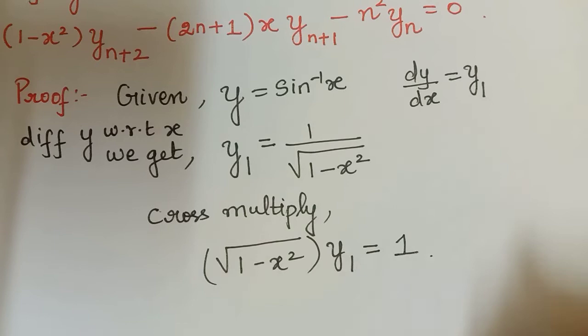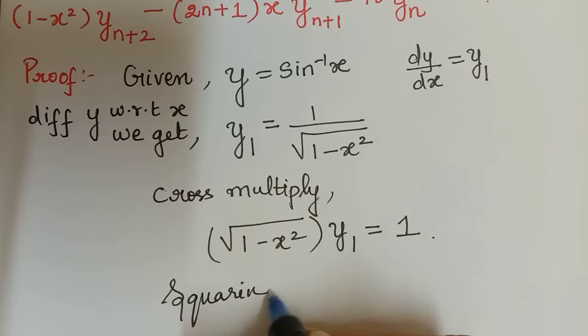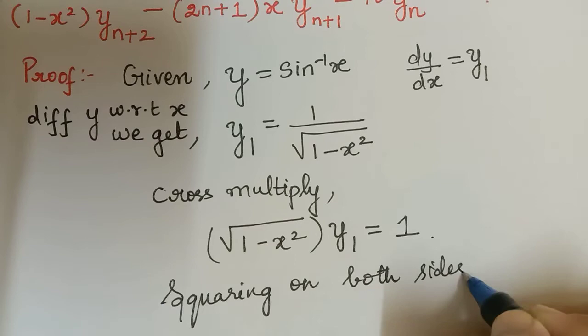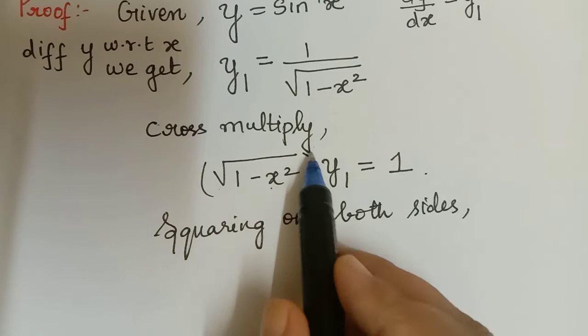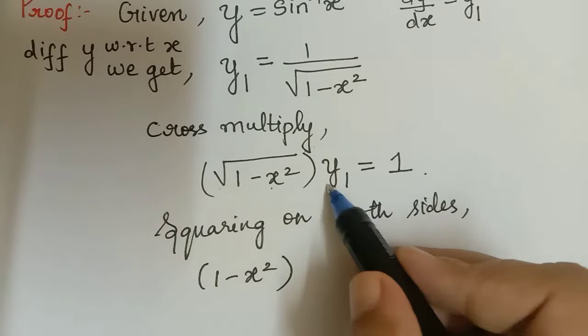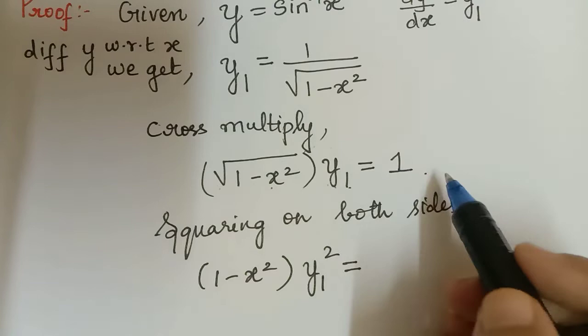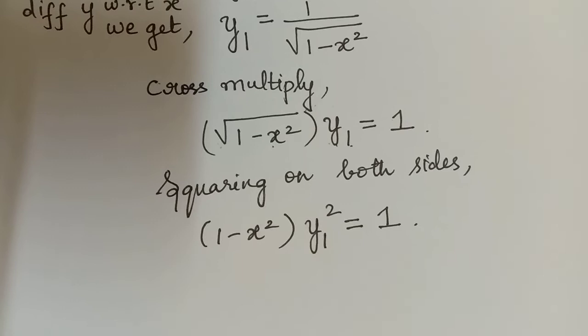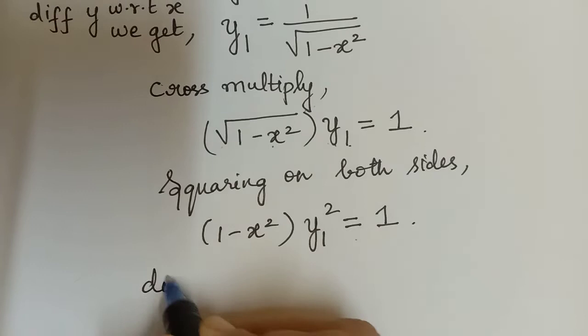Now we shall square on both sides. The square of square root of 1 minus x squared gives 1 minus x squared. Then y₁ has to be squared. So we arrive at 1 minus x squared multiplied with y₁ squared is equal to 1.